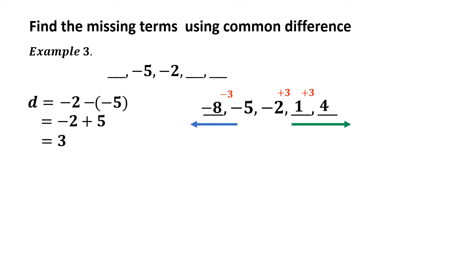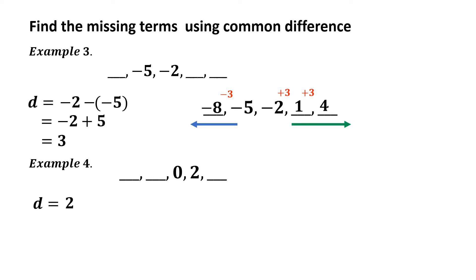Example number 4: the given arithmetic sequence has 3 missing terms and 2 available terms. The available terms are 0 and 2. The common difference is D equals 2 minus 0, which equals 2. Therefore, the common difference is 2.